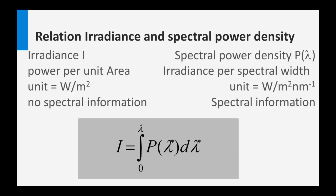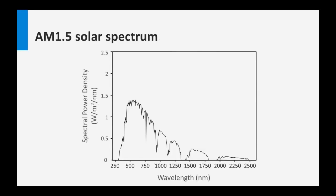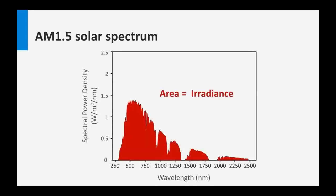The relation between both is indicated by the integral. I is the irradiance, P lambda is the spectral power density, and if you integrate over the spectral power density, you will get the irradiance. As an example, let's take the AM 1.5 solar spectrum, which we also introduced in week 1. Here you see the spectral power density, expressed in watt per square meter per nanometer. The black line shows you the spectral power density, meaning that the irradiance is the surface area underneath the spectral power density — so if you integrate this, you get the irradiance.